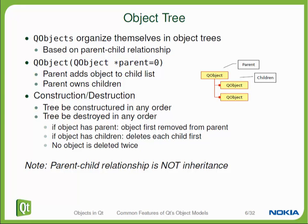The parent is assigned to the QObject at the time of creation, usually, and is passed in as a constructor argument. During the constructor, the object will register with its parent. So once the constructor of the base class is complete, the object is known to be a child of that object.